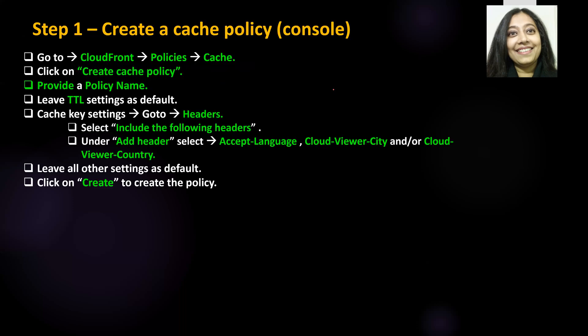Step one: we will create a cache policy. We will go to CloudFront policies, cache, create a cache policy, and give it a policy name. We will leave our TTL settings as default, then go to headers and select the specified headers, leave all other settings as default, and click on create.